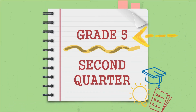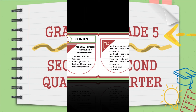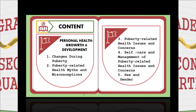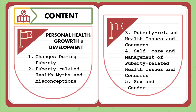Hello everyone. Once again, I am Moya Plaza, and today I will talk about the second quarter of the Grade 5 curriculum. Here is the content. Under the content, we have personal health: growth and development. Number one: changes during puberty — this will talk about the time when a boy or a girl becomes sexually mature and what changes occur when puberty happens.